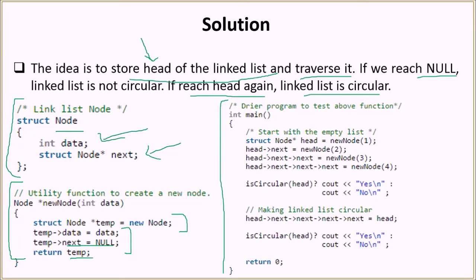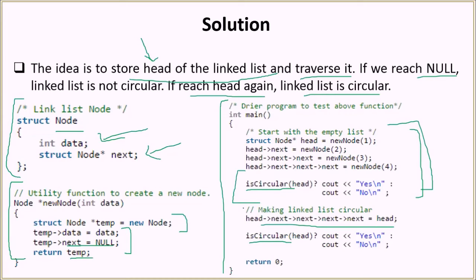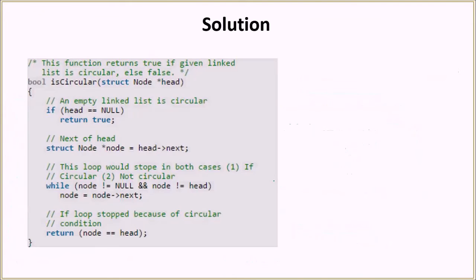Let's look at the driver method. First, we create a linked list with values 1, 2, 3, and 4, and then we call the isCircular method. At this point it is not circular. Then we make it circular and call the isCircular function again — in the first case it should return no, and in the second case it should return yes.